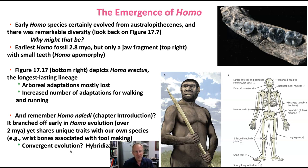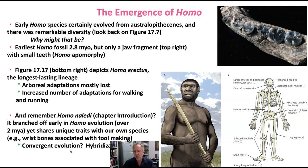The earliest Homo fossil is about 2.8 million years old, but we only know it from a jaw fragment shown on the top right of the slide. We know it's in the genus Homo because of the jaw morphology, the anatomy, and the small teeth. The teeth are characteristic of Homo, like us — they're not characteristic of australopithecines.